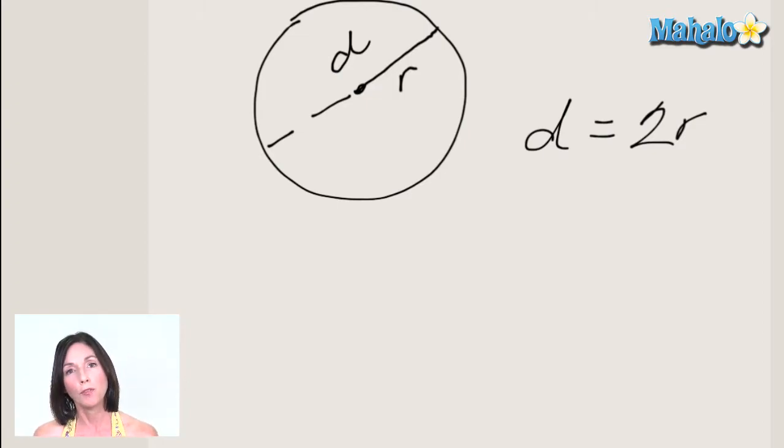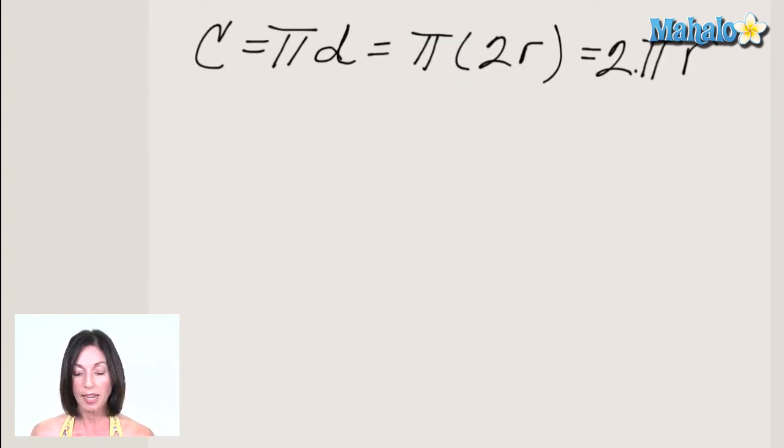Now, there's some common formulas associated with circles. One of them is the circumference. The circumference is the distance around the outside edge of the circle, and that is designated by this formula.